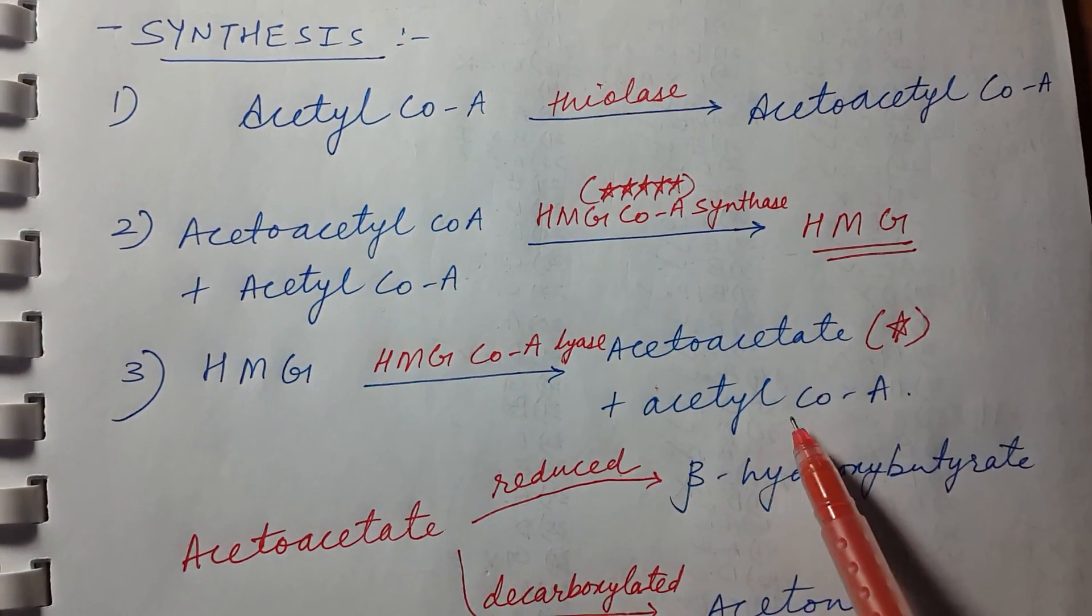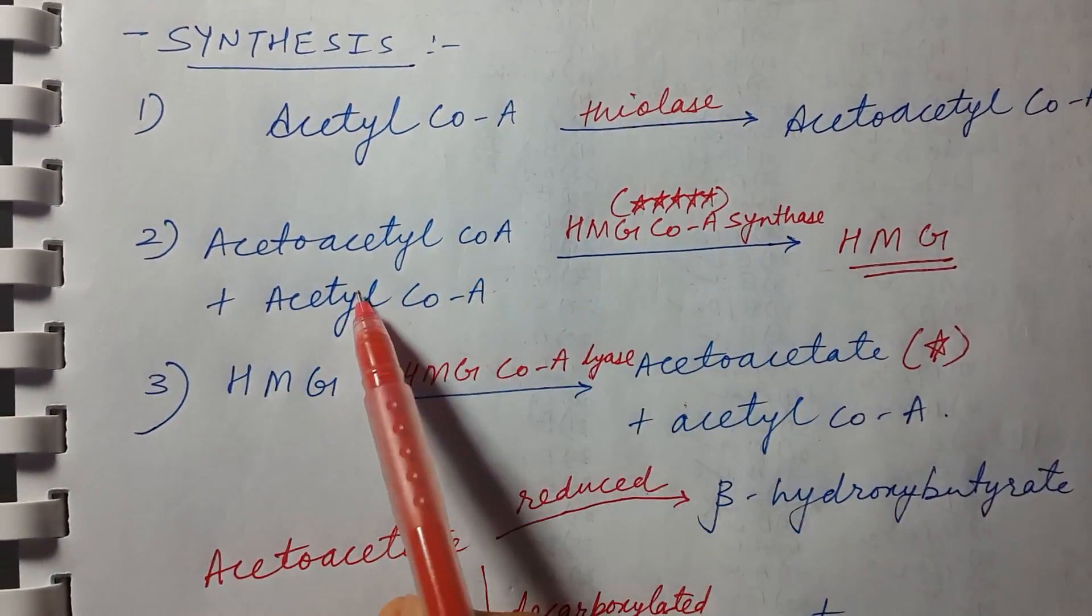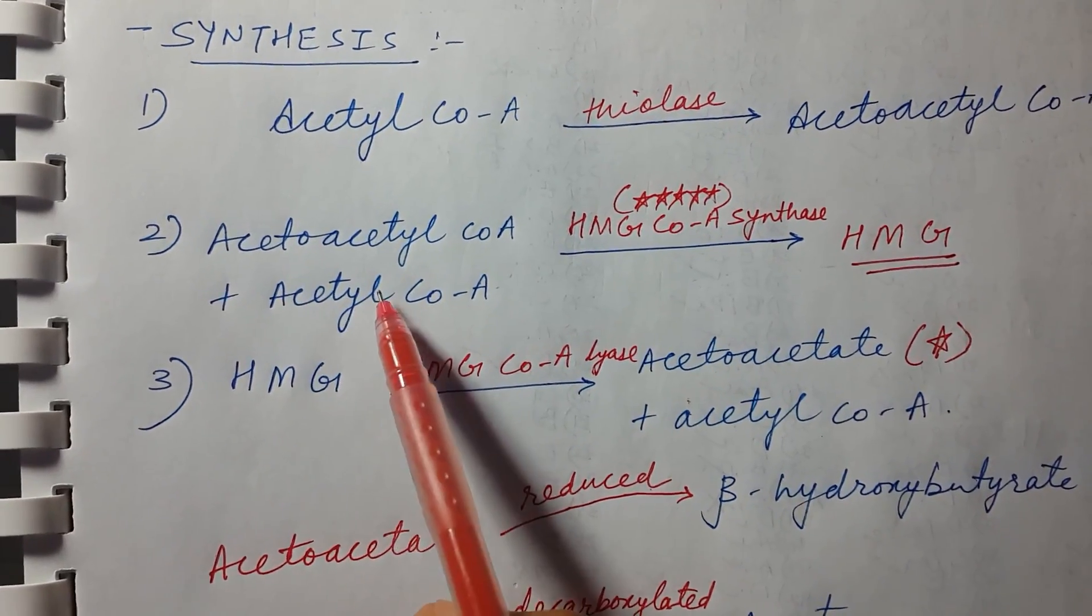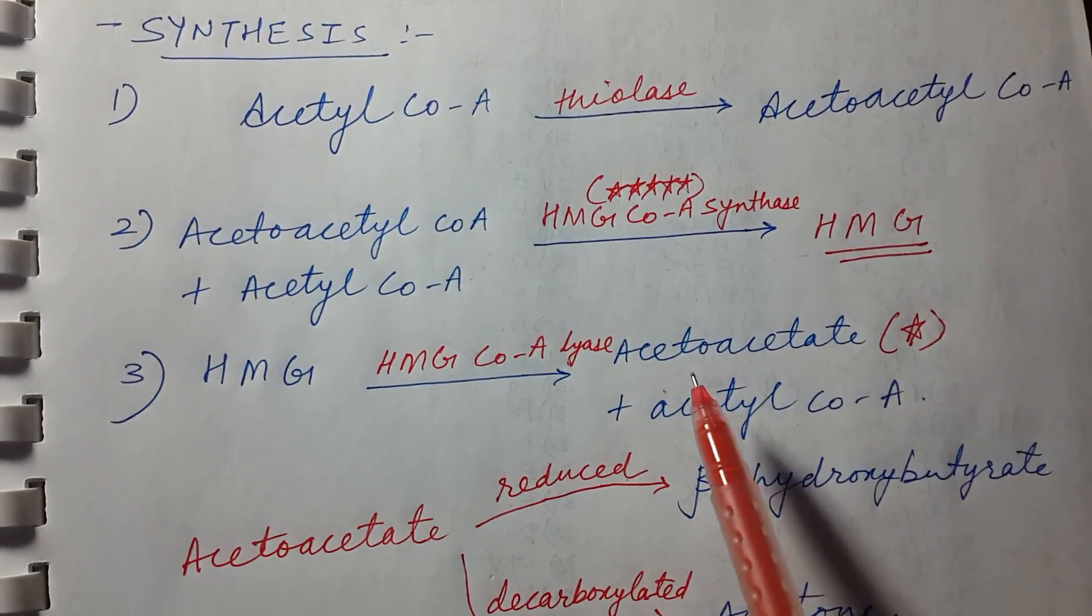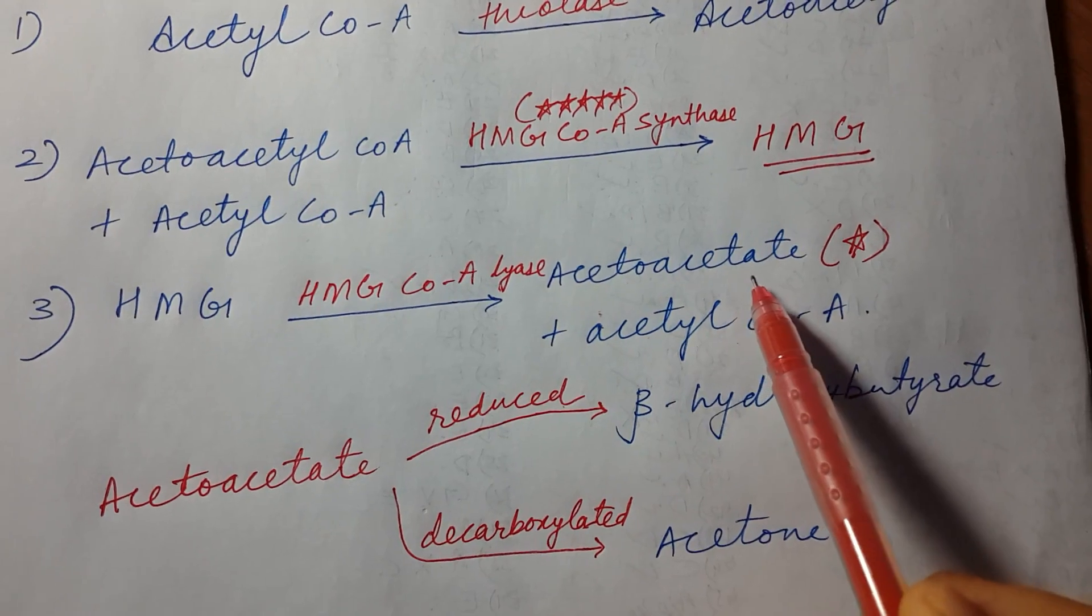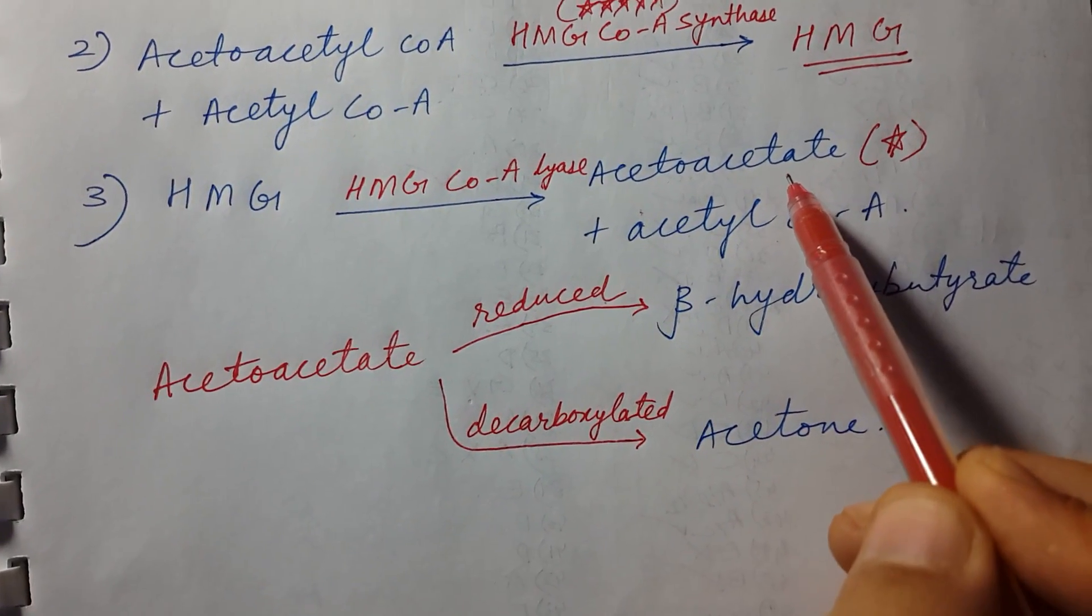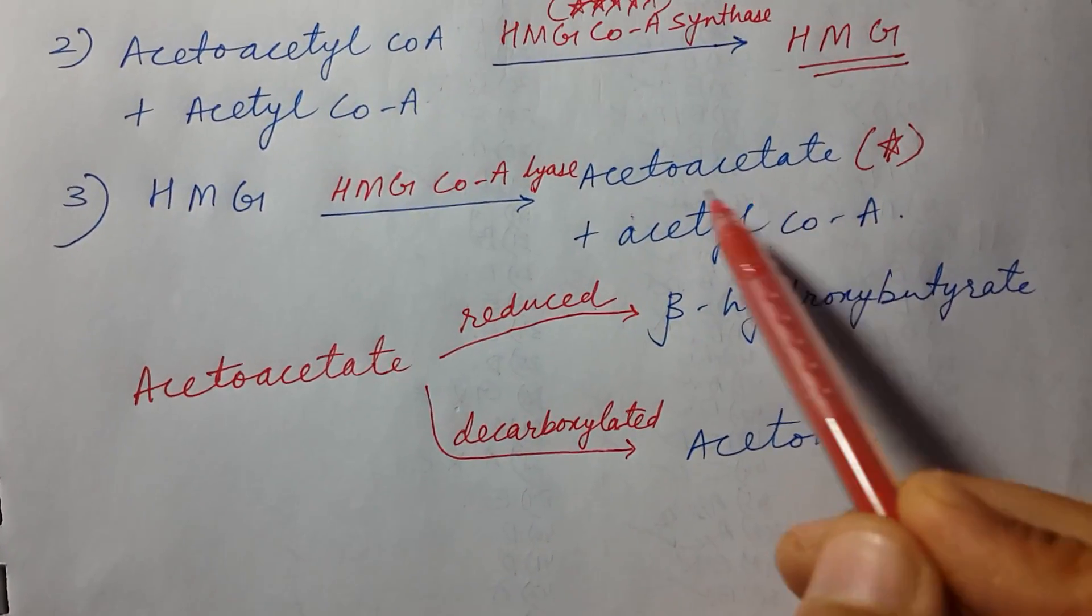See, it is exactly like the opposite step. If we reverse the second step it will form like a third step. And the acetoacetate formed here is the first ketone body. So see, this is the first ketone body, acetoacetate, in the whole ketone body synthesis.